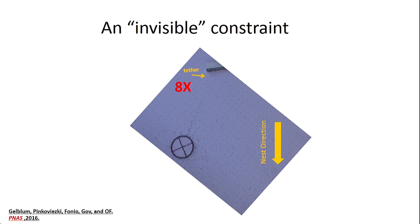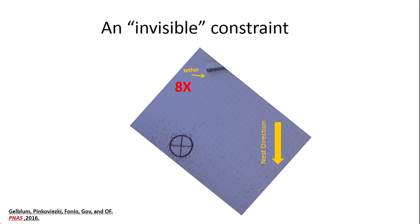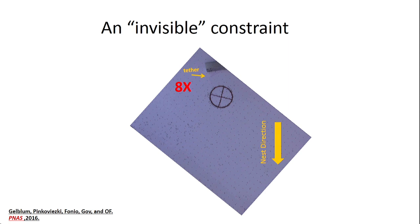We used the invisible constraint. Unlike the walls I showed before, this is a piece of hair tethered here and tied to the load. What happens is the ants go towards the nest, and when the hair becomes taut, they start this pendulum-like motion. We're going to look at this system — it's different from what we saw before and will help test our model. We want to test our model on a different system. We use this invisible constraint because we don't want the ants to have any information other than the nest is in this direction — we want the leader ants to be as simple as possible, just pulling towards the south.